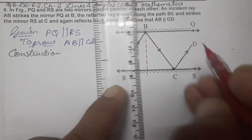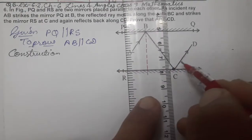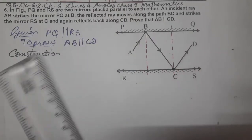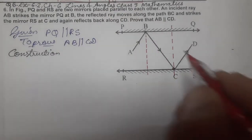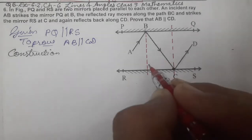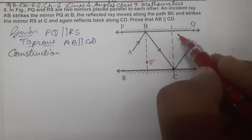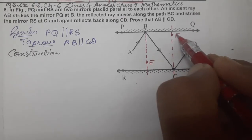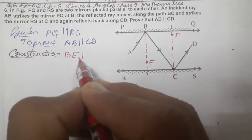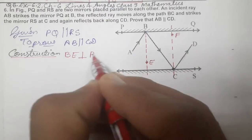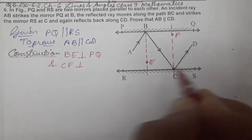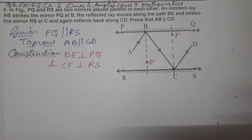Construction: we have to make one perpendicular from B. This is a perpendicular. And this is from C, a perpendicular. So let's name it. Construction: BE perpendicular to PQ, and CF perpendicular to RS.